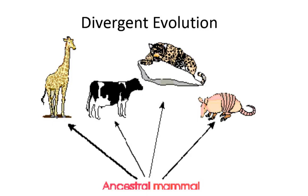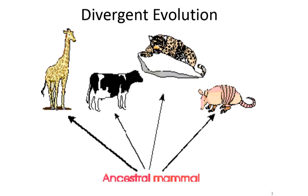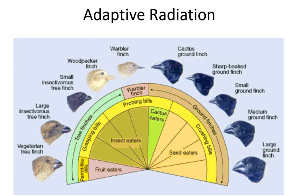The opposite of that is divergent evolution — when many organisms share one common ancestor. We have many mammals today: the giraffe, the cow, the jaguar, and the armadillo, all very different in structure and function in the way they live, yet all sharing very similar commonalities because they share one common ancestral mammal that lived long ago. Another name for divergent evolution is adaptive radiation.